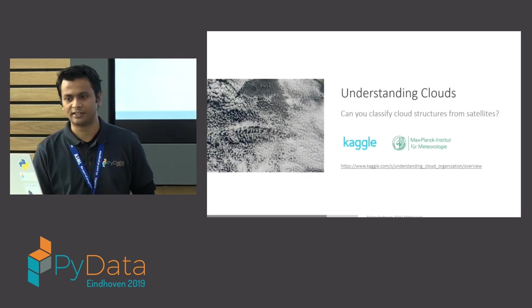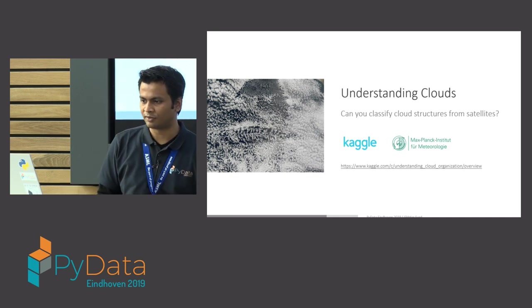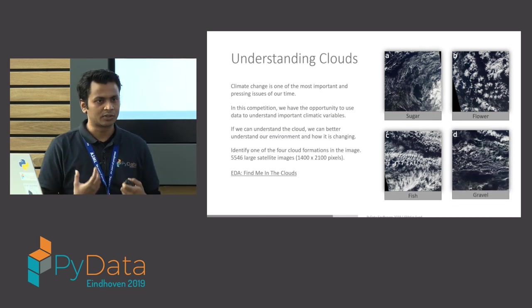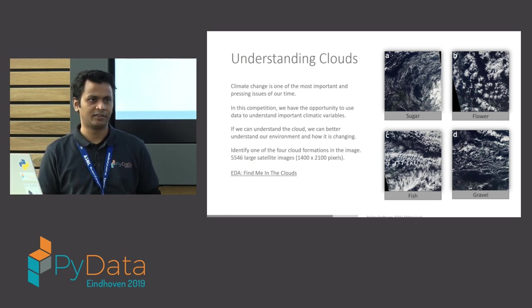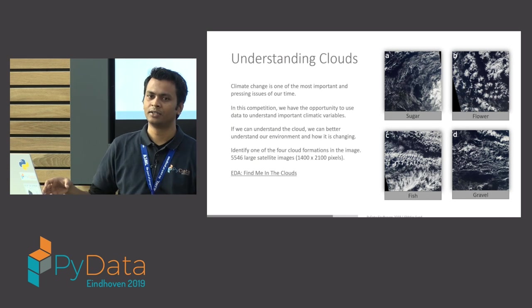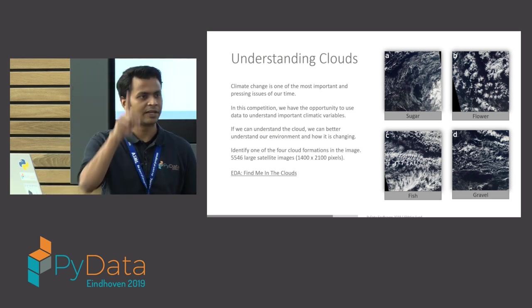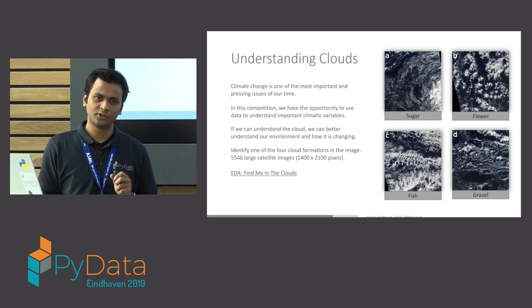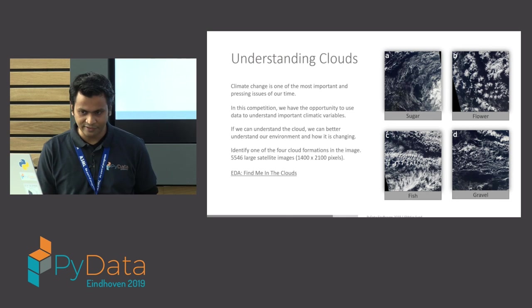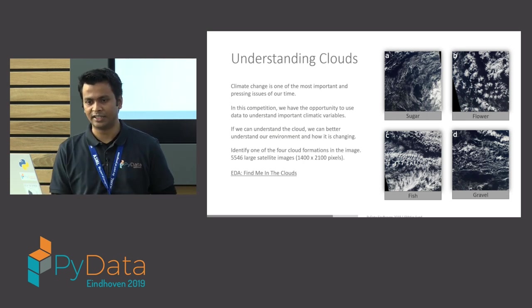The final competition is about understanding clouds — not Google Cloud or Amazon, but actual clouds. We are asked to classify the type of cloud formation for meteorologists. Climate change is one of the most pressing issues of our time, and this competition is supposed to help professionals understand why these clouds are forming in an automated way, and better understand how we are changing the climate. The images are quite high resolution and there are not that many of them — about 5.5K images. Here is my EDA, 'Find Me in the Clouds.'